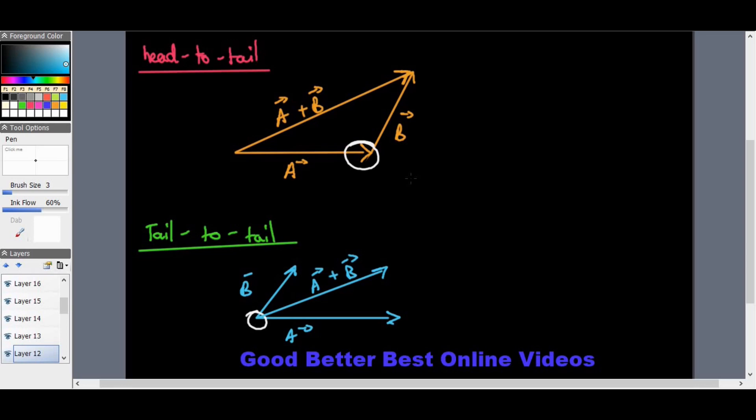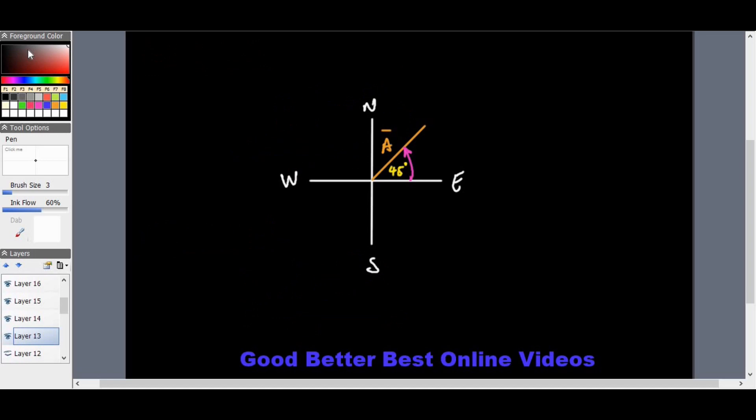To explain the resultant vector: a resultant vector means, as a result of the two vectors, we have a single vector that has the same effect as the two or other vectors combined. Now I've got a question here with a car, compass direction, and a vector going in a certain direction.